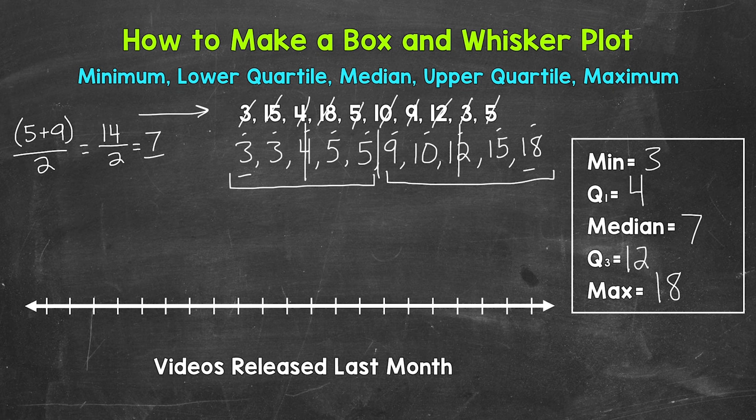Now we have all of the information we need to create the box and whisker plot. We need to start by creating a number line. Our minimum is 3 and maximum is 18. So let's start at 0 and count to 20. That will include everything we will need. Now depending on the data you are working with, you can adjust the number line. But for this example, 0 to 20.